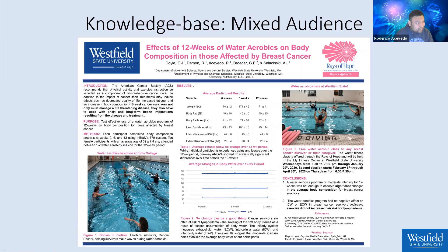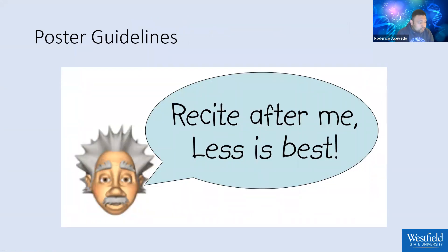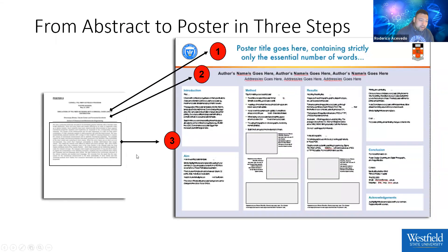Now that you know about the audiences you'll be encountering, let's talk about poster guidelines. Even though we want to put everything we've ever done onto the poster, it might be more beneficial to use less. I'm going to show you how to go from abstract to a poster in three basic steps. Here we have our abstract. If you're applying to present at Kirka, you'll be asked to provide an abstract of about 250 words in length, depending on where you go.